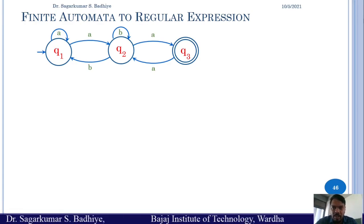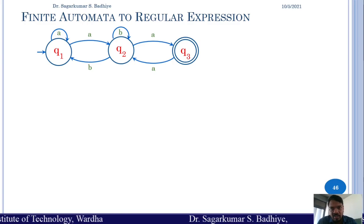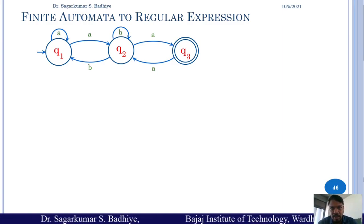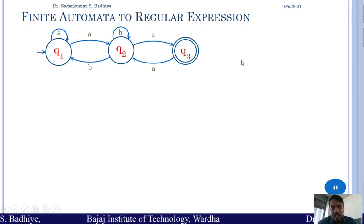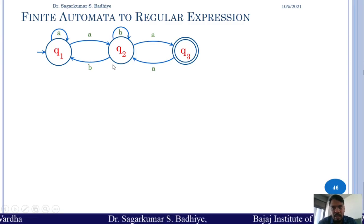In the previous class we discussed how to write regular expressions for a given language. Today we are going to look at how we can convert a finite automata to a regular expression. This is required because both finite automata and regular expressions represent the same set of languages known as the regular languages. To do this conversion, we need to make use of Arden's theorem.